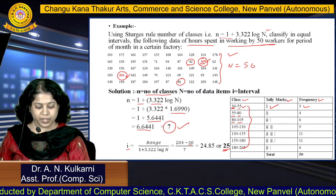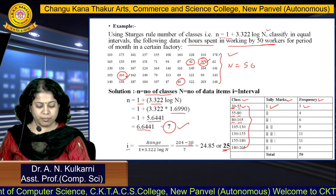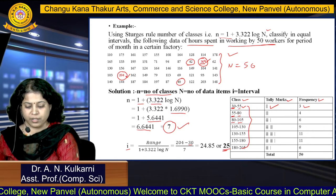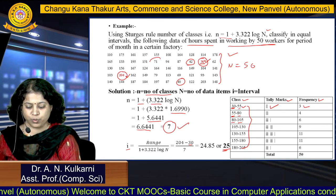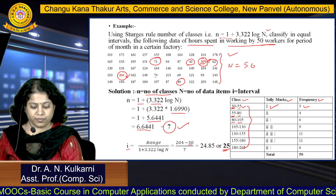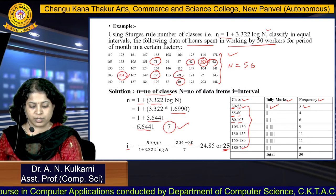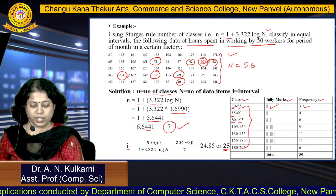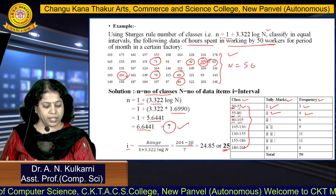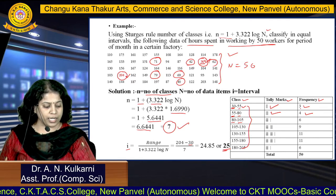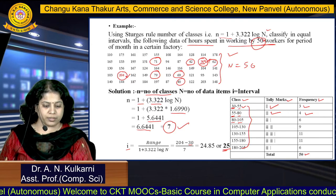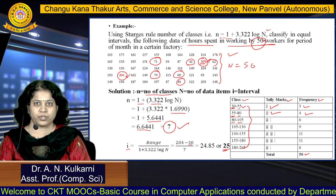For the class 55 to 80: we include values that are 55 and above but less than 80. Scanning the data, values 62, 79, and 69 are found in this range — a total of 4 data items. So tally marks are 4 and frequency is 4. In this way we calculate frequencies for all classes. The total frequency sums to 50, which matches the number of data items, confirming the frequency table is correct. This completes the construction of a frequency table for continuous frequency distribution.